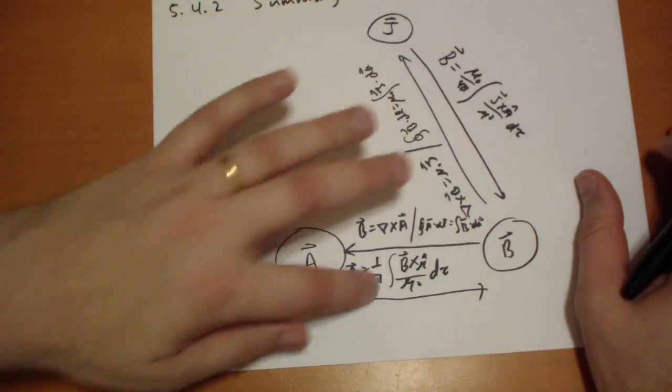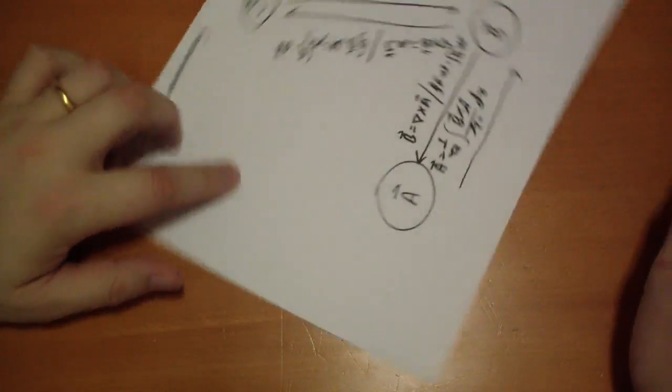Okay, there's some remarkable similarities between A and B, and B and J. So, what about J and A? How do you do that?